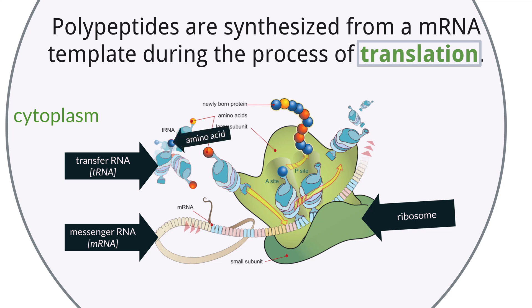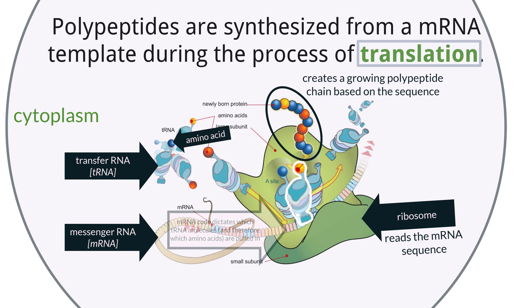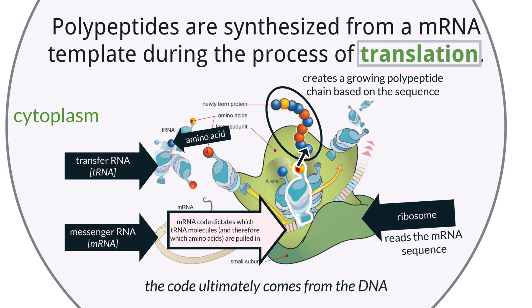The overall gist is that the ribosome reads the messenger RNA sequence in order to create a polypeptide chain. It does this by pulling in transfer RNA molecules that are carrying amino acids. The messenger RNA code will pull in specific tRNA molecules carrying specific amino acids that need to be added to the chain in an order specified by the code. Remember that the messenger RNA sequence was copied from the DNA in the nucleus from transcription, so the DNA is still the main code controlling which of the 20 amino acids are placed in order to make the polypeptide. The messenger RNA is just the messenger molecule carrying the code because the DNA cannot leave the nucleus.